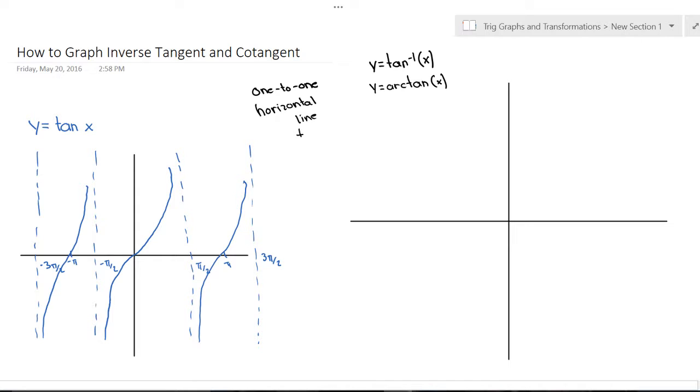What the horizontal line test means is that I can draw a horizontal line across this paper, and it's only going to touch the graph one time. Now, clearly, as is, this tangent function is not one-to-one and does not have an inverse. So, what we have to do is restrict its domain somehow and make it one-to-one.